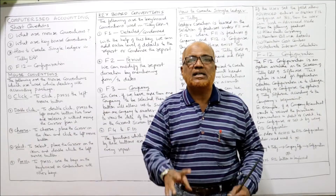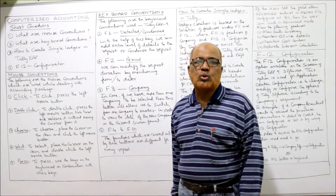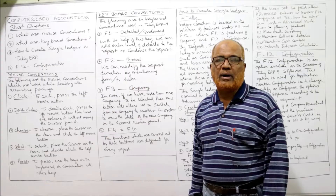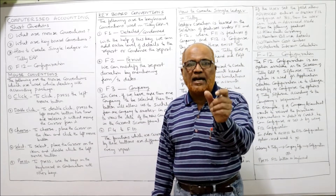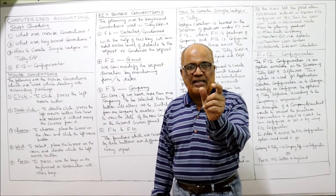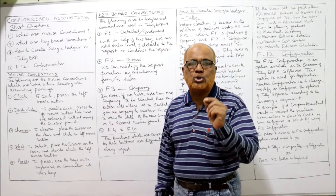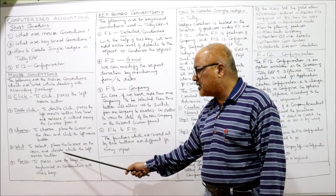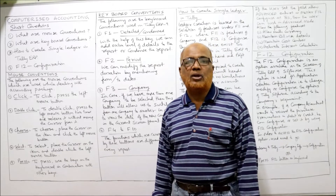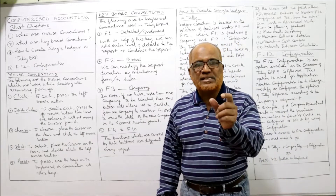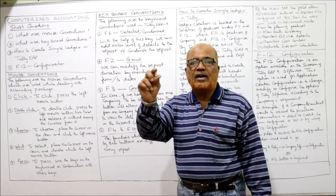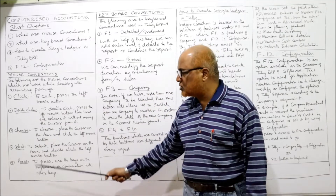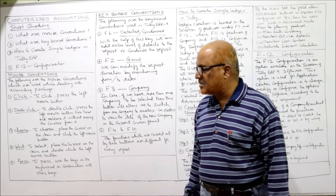Choose means to place the cursor on the item and click the left button of the mouse once — that is called choose or select the item. Select means to place the cursor on the item and double click the left button of the mouse. So to select, place the cursor on the item you want, then press the left button two times — that is called select.